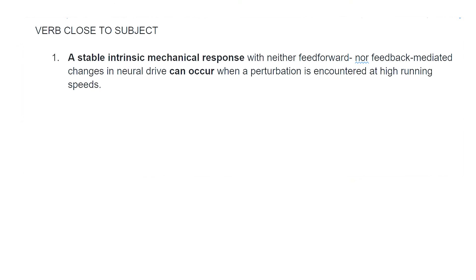The third thing to pay attention to is how close your main verb is to the subject of a sentence. Especially in longer sentences with sub-clauses, it often happens that the main subject and the predicate are too far from each other in the text — that is a good way to lose your reader. In this example, the subject is 'a stable intrinsic mechanical response' and the verb is 'can occur.'